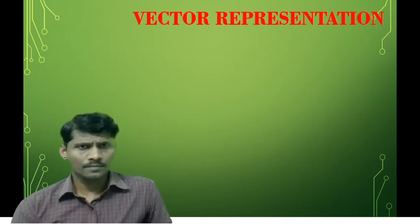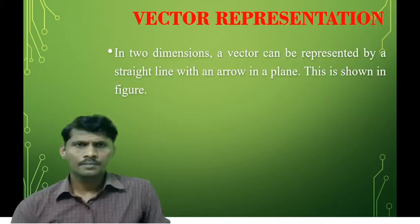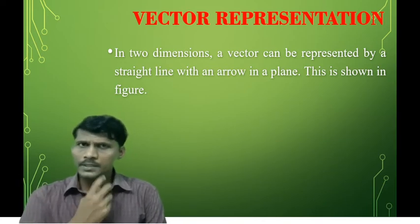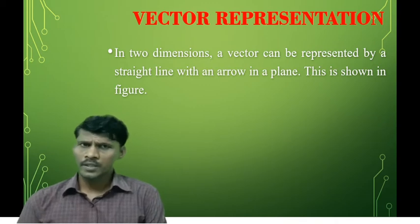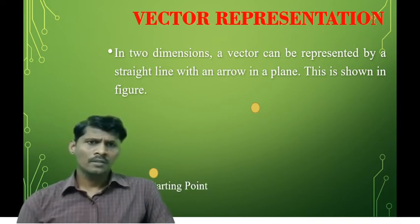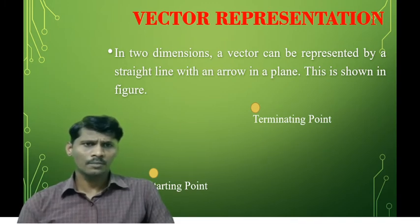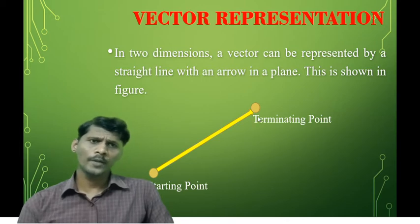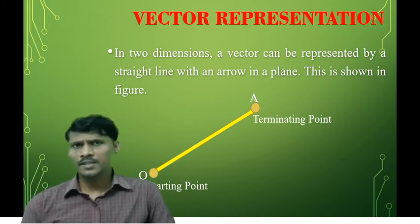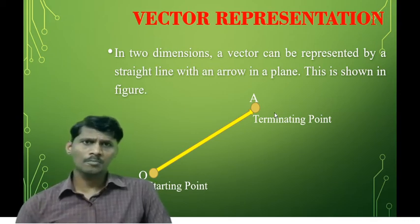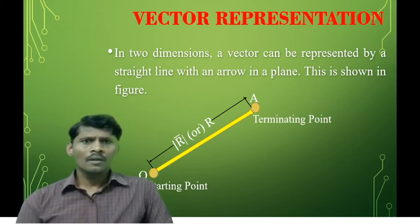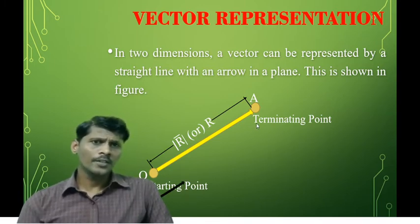In two dimensions, a vector can be represented by a straight line with an arrow on top. Consider two points: the starting point, called the origin, and the ending or terminating point, called point A. Draw the vector line from the starting point to the ending point. The capital R-bar is the distance from the origin to point A, and along this direction, the unit vector is A_R-bar.